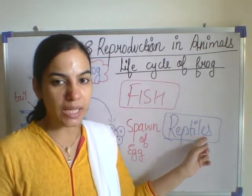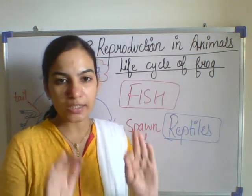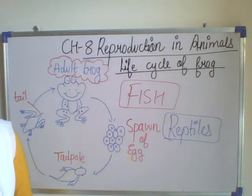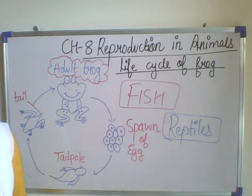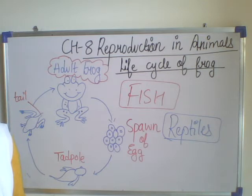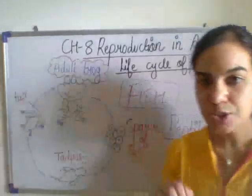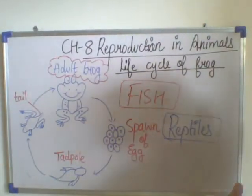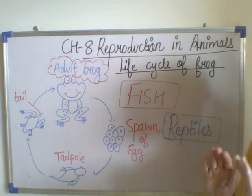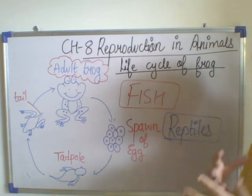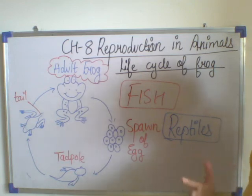In the case of reptiles like snake, lizard, and crocodile, their egg shell is very hard. Turtles and crocodiles lay eggs in shallow pits near the river bank. Many eggs are eaten up by other animals. Only a few eggs get warmth from the heat of the sun and hatch. The other eggs are eaten up by other animals.